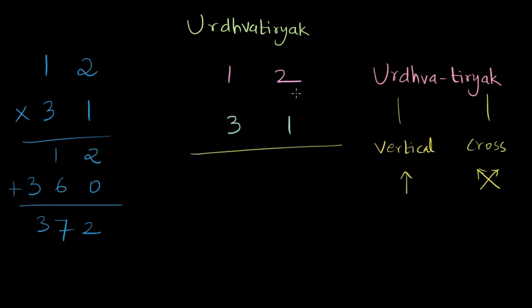So the first step is to complete Urdhva on the rightmost digits. Urdhva means vertical multiplication and we can write the result here, which is 1 times 2, which is 2. Then we put a slashed line. Now the next step is to complete Tiriak. Now Tiriak is going to be like this, where we multiply 1 and 1 and 3 and 2. In Tiriak, we add the two results.